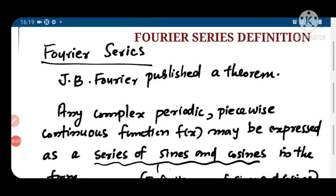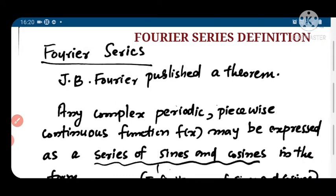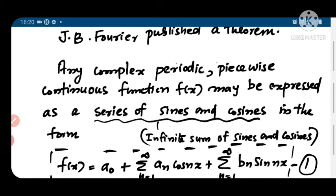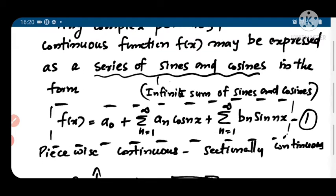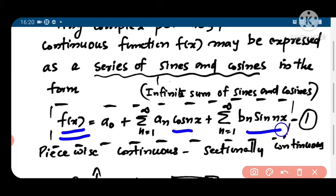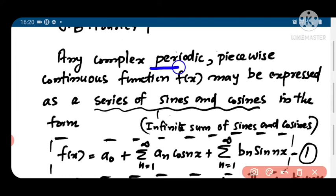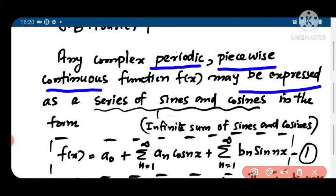Today we start our discussion on the Fourier series. We have already learnt the Fourier series in the lower classes. The definition we already know: f(x) = A0 plus sigma n=1 to infinity, a_n cos(nx) plus sigma n=1 to infinity b_n sin(nx). Any complex periodic piecewise continuous function may be expressed as a series of sines and cosines in this form.